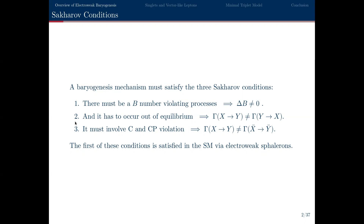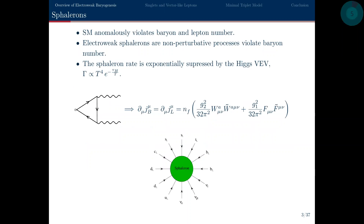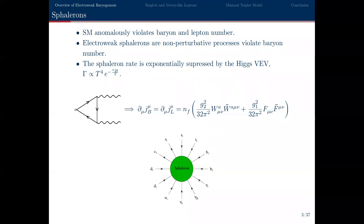Fortunately, the first of these three conditions is already satisfied in the standard model via electroweak sphalerions. The standard model enormously violates baryon and lepton number even though they're classically conserved, and electroweak sphalerions are non-perturbative processes that allow these baryon and lepton numbers to be violated. However, the rate of sphalerions is exponentially suppressed by the electroweak symmetry breaking Higgs vacuum expectation value. At very high temperatures, or when electroweak symmetry is restored, sphalerions can violate baryon number and generate a net baryon asymmetry.